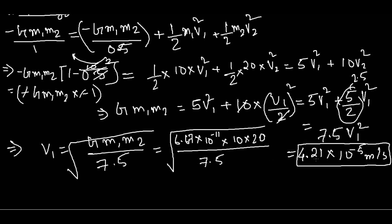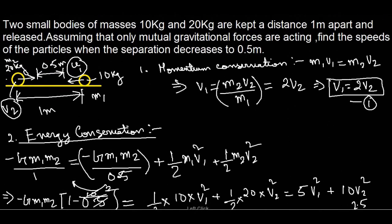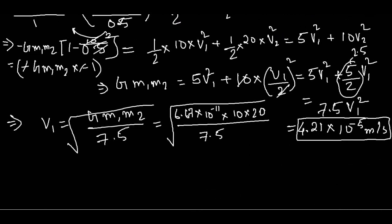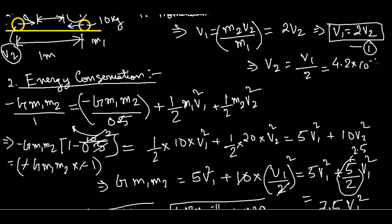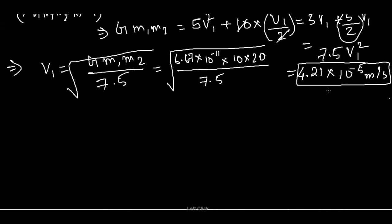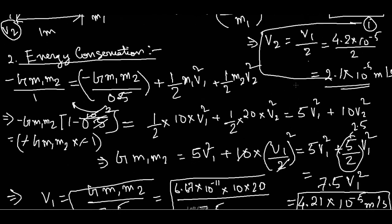So now what I have to do is put this in the equation above. V2 equals V1 by 2. V1 which we have just got is 4.21 into 10 to the power minus 5 meters per second, so V2 is 2.1 into 10 to the power minus 5 meters per second. So we have found the velocities V1 and V2. Thank you.